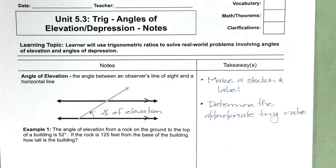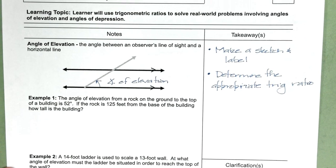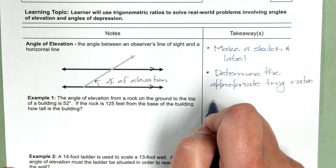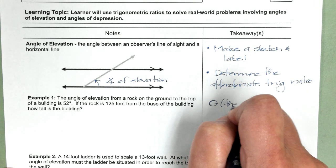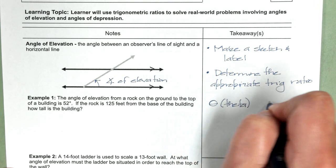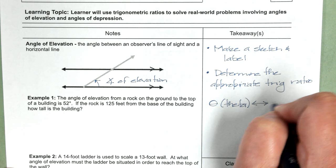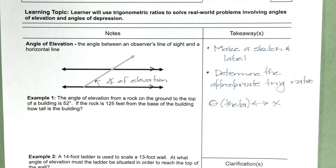And I'm going to introduce a new variable with these word problems, and it is the Greek symbol theta. Think of theta like X was with your algebra. Theta is used to designate angles in trig.